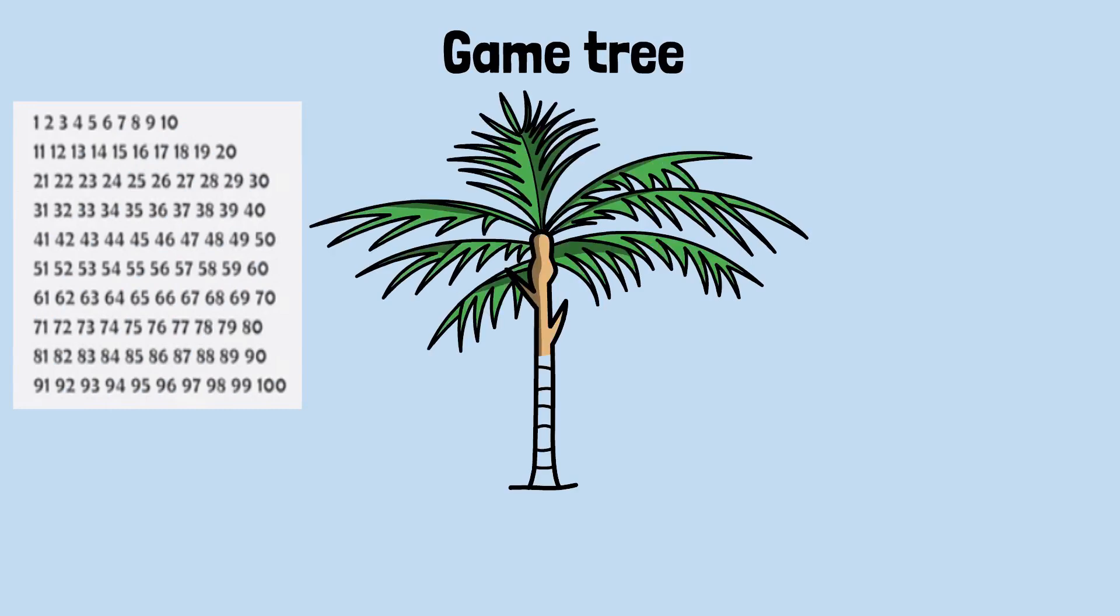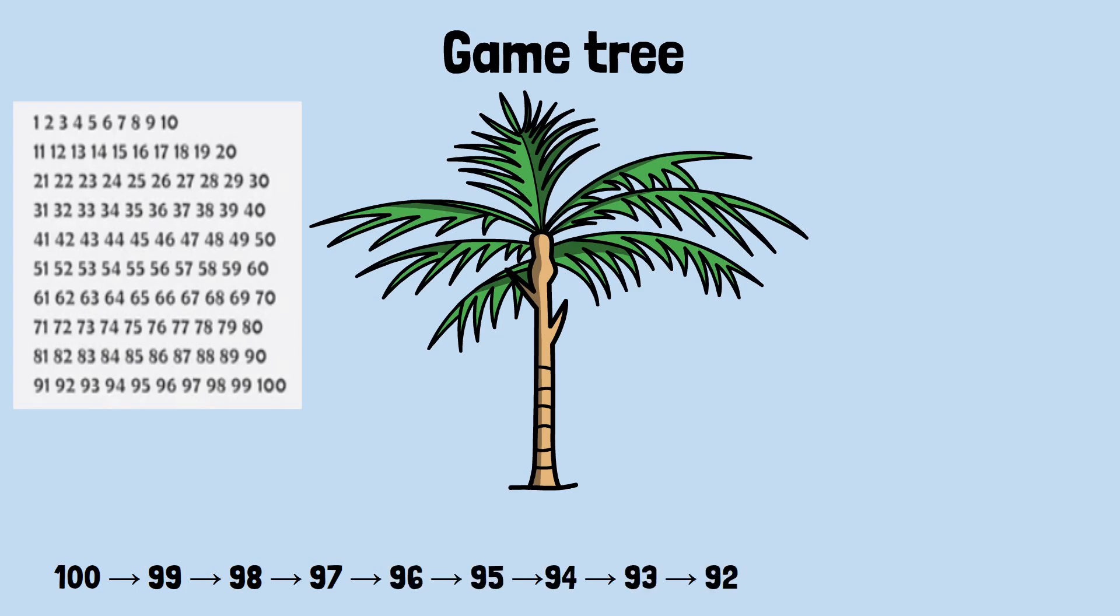In our counting game, the optimal strategy emerges from analyzing the game's game tree, the branching structure of all possible moves and countermoves. When we work backward from the winning condition, reaching 100, we can identify positions that are winning, where the current player can force a victory, versus losing, where the current player will lose against optimal play.